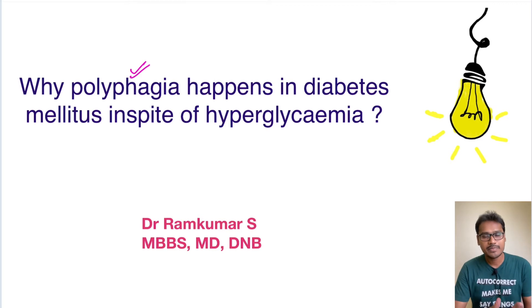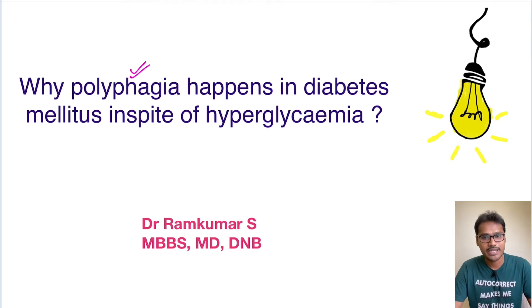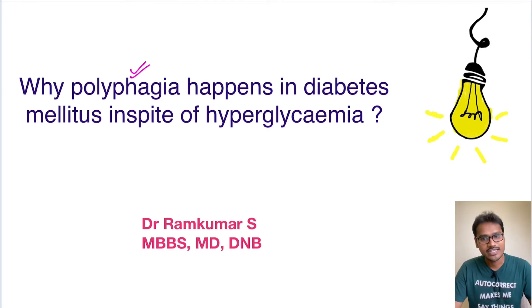In a diabetes patient, the classical condition is hyperglycemia — there is an increase in glucose in the blood levels — but they are having polyphagia. Let's try to understand the reason behind it.